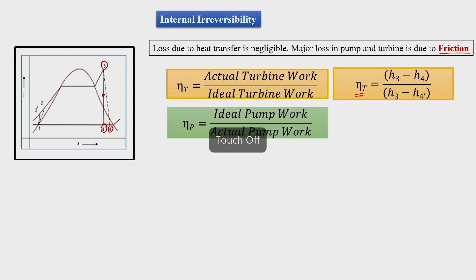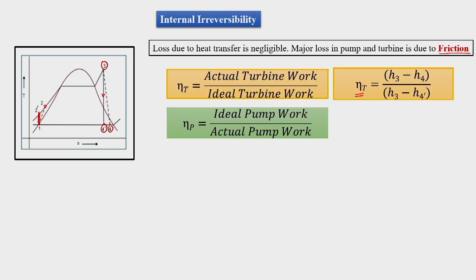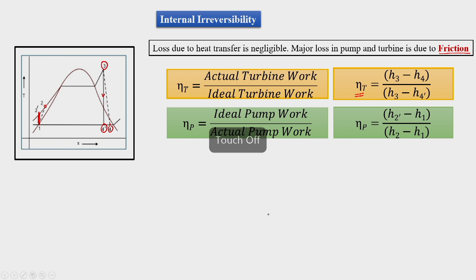For the pump, we expect isentropic compression from 1 to 2 dash, but frictional losses in the pump lead to point 2 instead of 2 dash. Since the pump is a work-absorbing machine, it ideally absorbs less work but actually absorbs more. Pump efficiency is defined as ideal work input divided by actual pump work input: η_pump = (h2 dash minus h1) divided by (h2 minus h1).